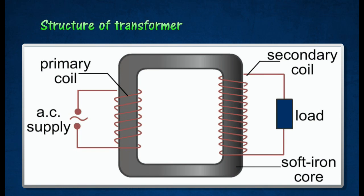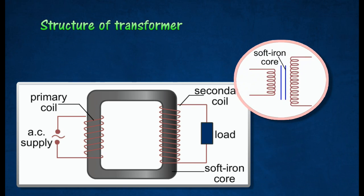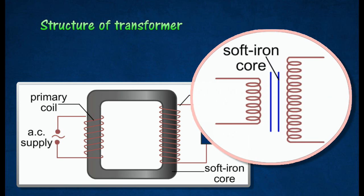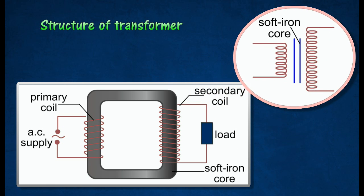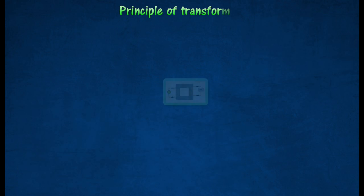A transformer consists of two coils of insulated copper wire wound around a laminated soft iron core. The coil that is connected to the power supply is known as the primary coil. The coil that is connected to the load is known as the secondary coil. The following diagram shows the symbol for a simple transformer.